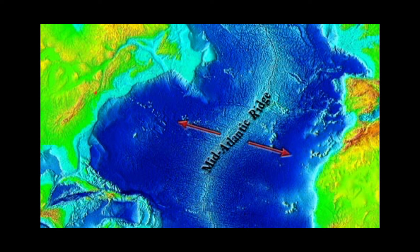Why? We are influenced by the divergent boundary under the Atlantic Ocean called the Mid-Atlantic Ridge. On either side of the Mid-Atlantic Ridge, the plates are being pushed apart, and you can see that in these arrows.